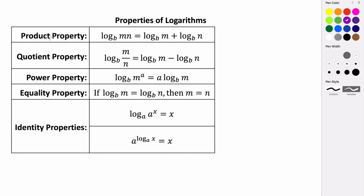The first one, the product property, says if you have a log base b of some product m times n, you can split this up into a sum of two logs with the same base as the original log, where each argument of your new logs are just the factors of your original argument, so m and n.